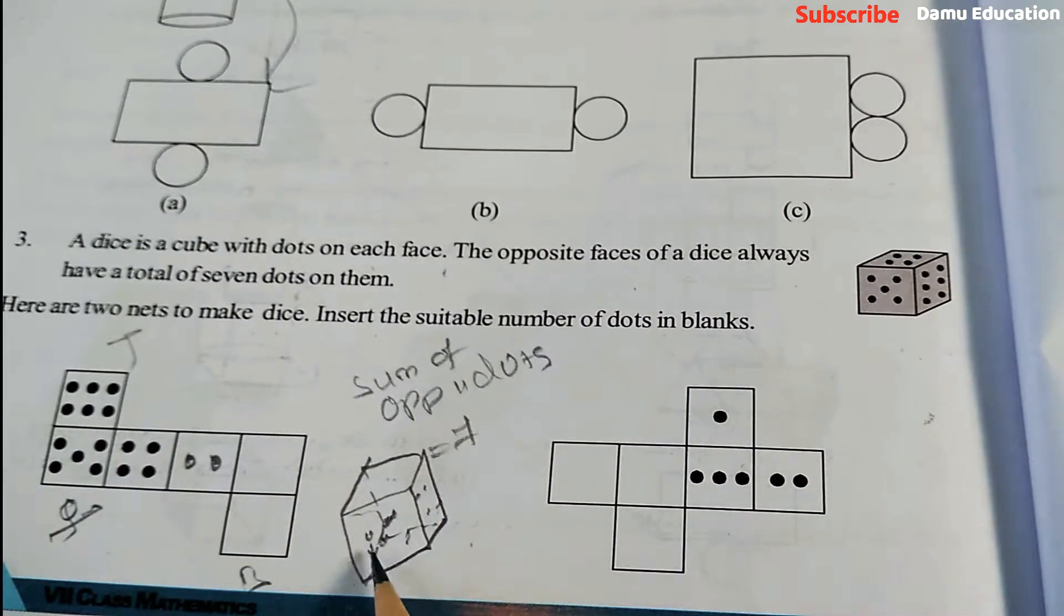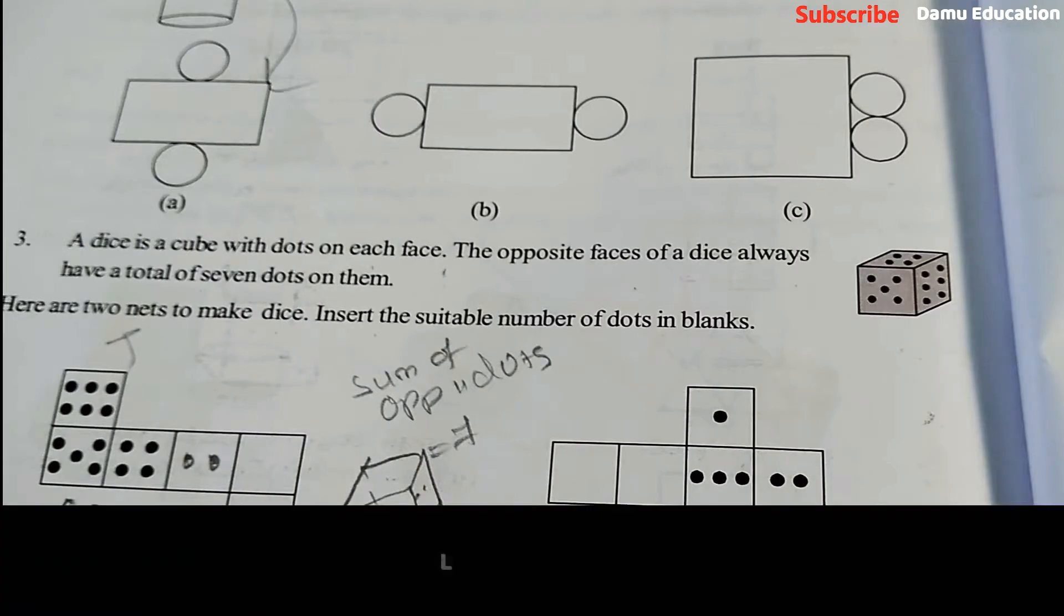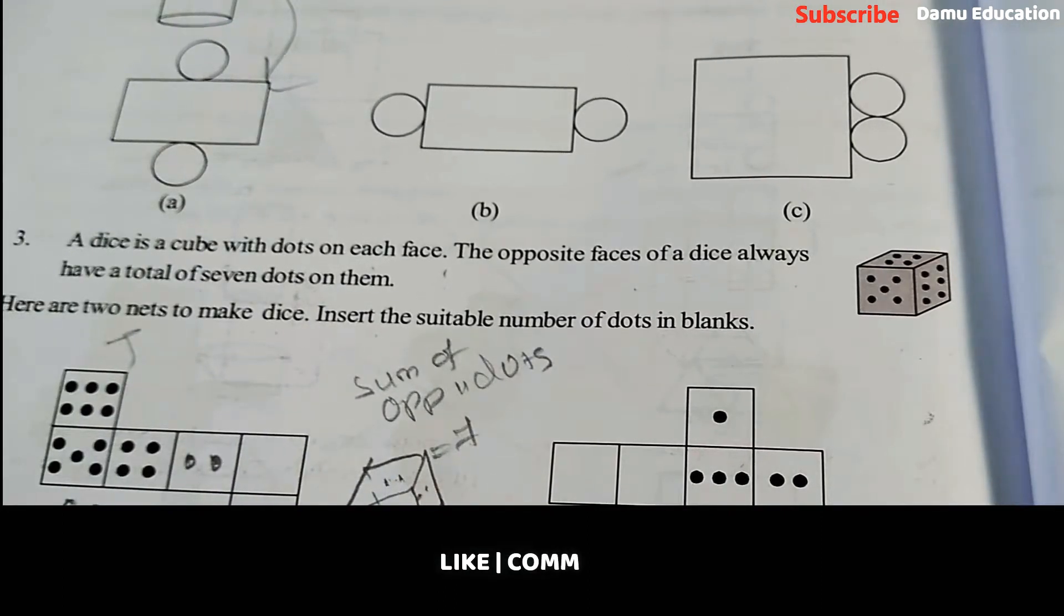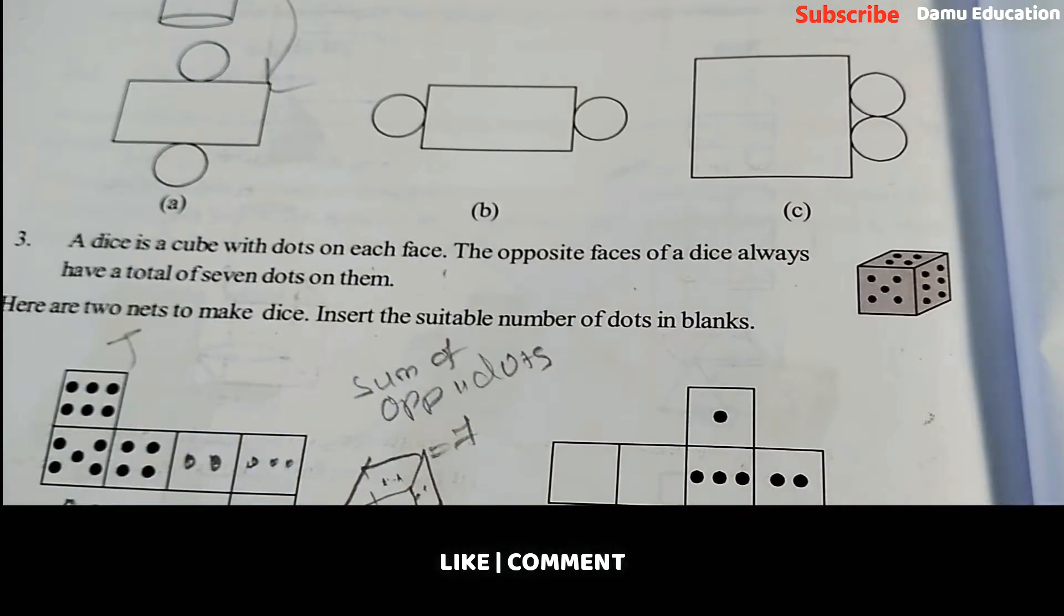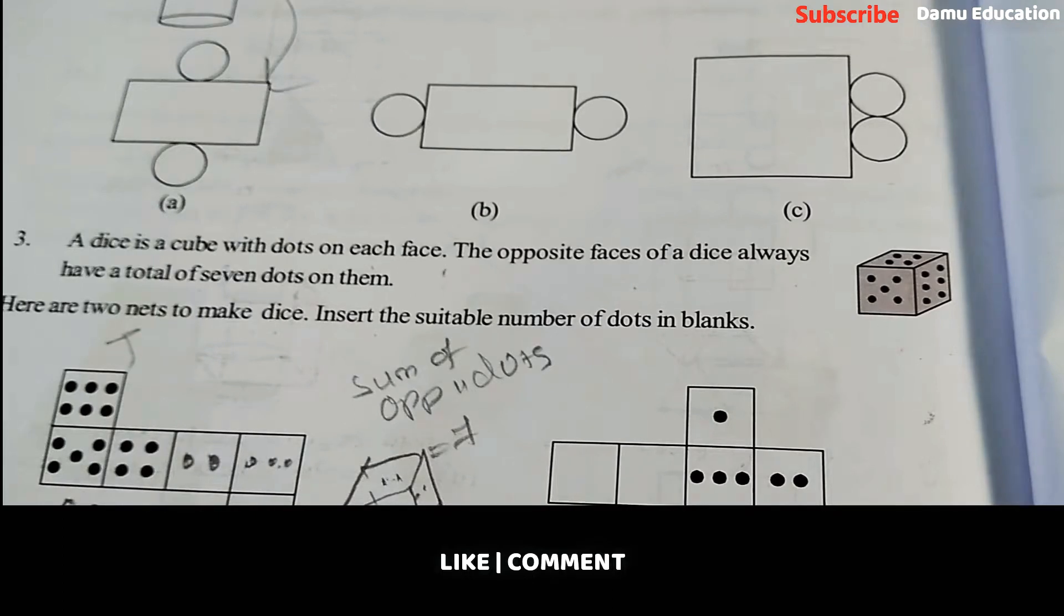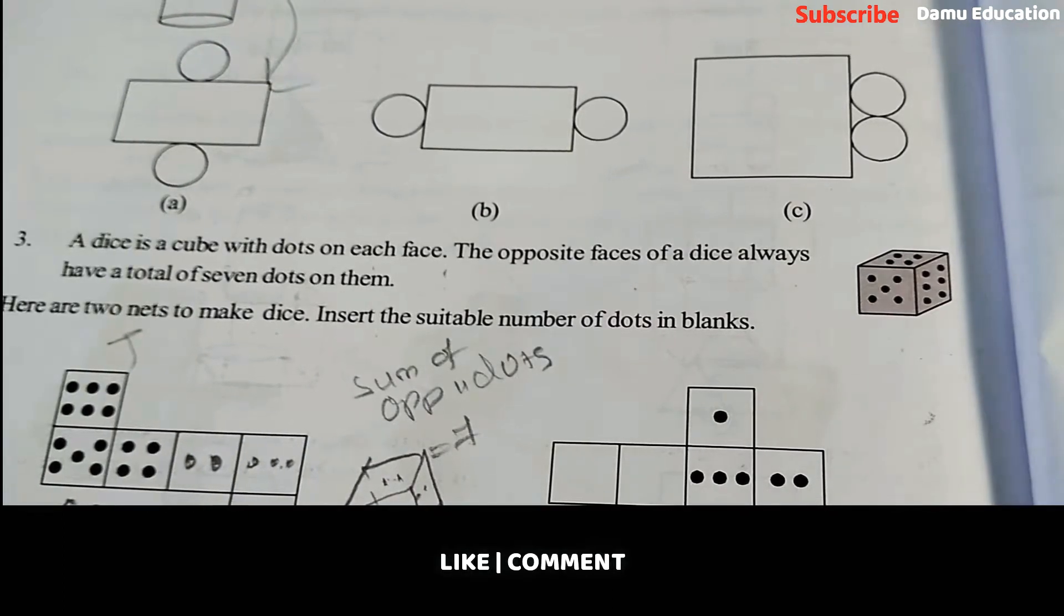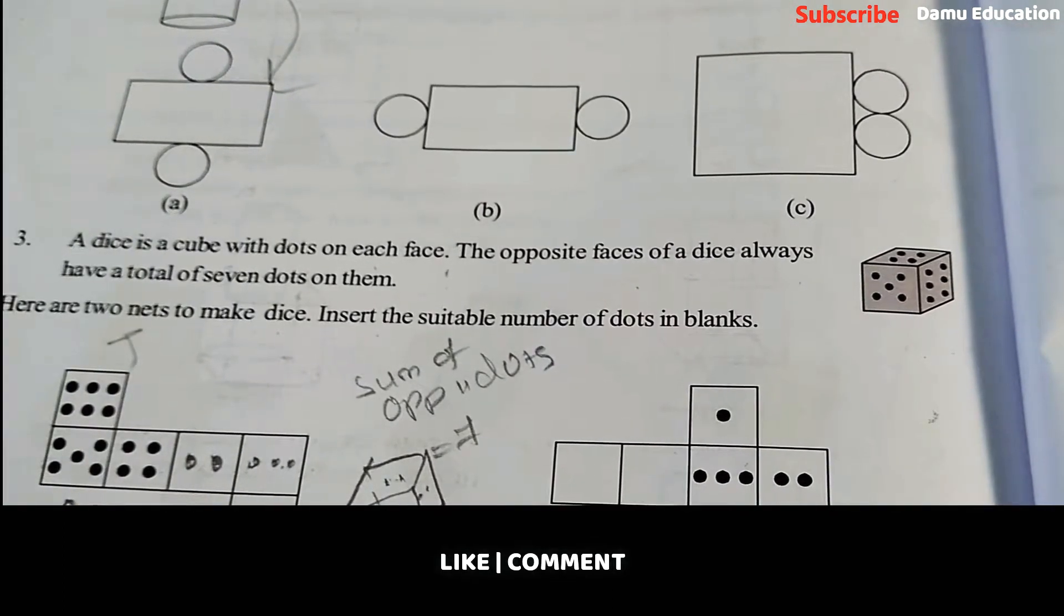Next, for the opposite faces, this one will come, already 4 is there. So for this, 2 will come. For this, 3 will come. Why? Because 4 is the opposite face to this. It is down, top is there, 1. So 6 plus 1 will be 7. So our next one...